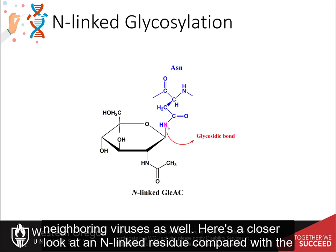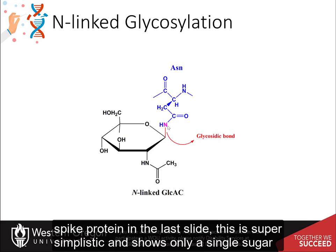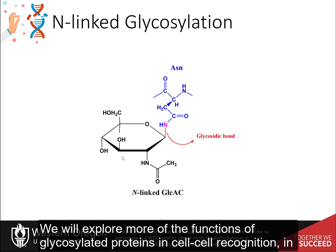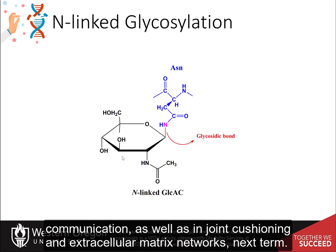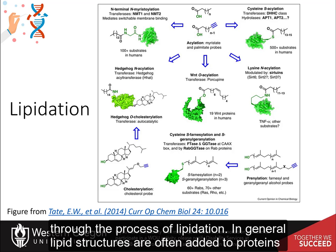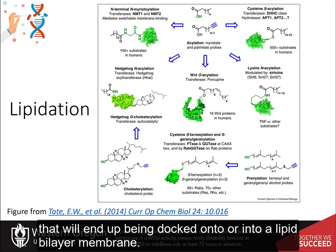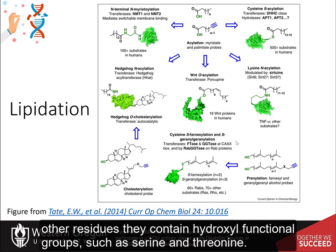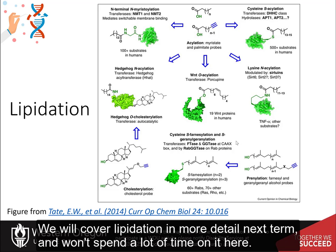Here is a closer look at an N-linked residue. Compared to the spike protein example, this is highly simplified and shows only a single sugar residue attached to the protein. We will explore more functions of glycosylated proteins in cell-cell recognition and communication, as well as in joint cushioning and extracellular matrix networks next term. Proteins can also be modified with lipid structures through lipidation; lipid structures are often added to proteins that will be docked onto or into a lipid bilayer membrane, and can be linked by cysteine, lysine, serine, threonine, and other residues containing hydroxyl functional groups.